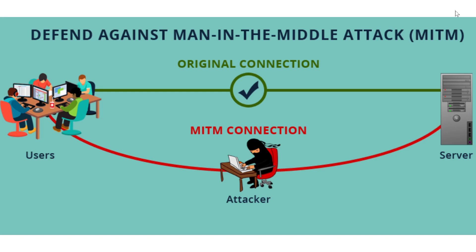So what is a man-in-the-middle attack? A normal connection on your computer with another computer on the internet is the green line that you see here. You see a table with people, a green line with a checkmark, and a server at the other end. When we talk about the cloud, in reality we're talking about stuff that is on other computers — servers on the internet. A secure, unspied-on connection is a direct green line from one point to the other.